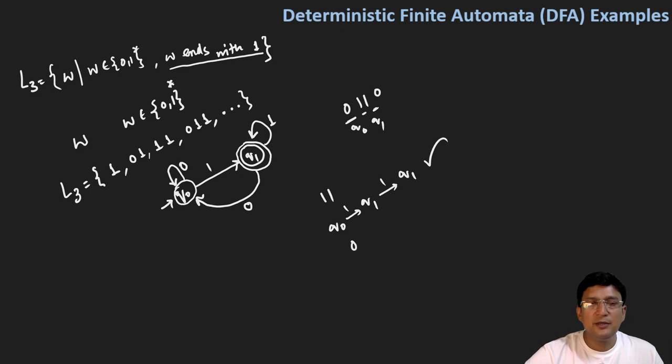Let's take another string that should be accepted, so let's say 0011. From q0 on 0 we stay at q0, again on 0 we remain at q0, on one we move to q1 state, and again on one we remain at q1 state, and q1 is my final state so this string will be accepted.